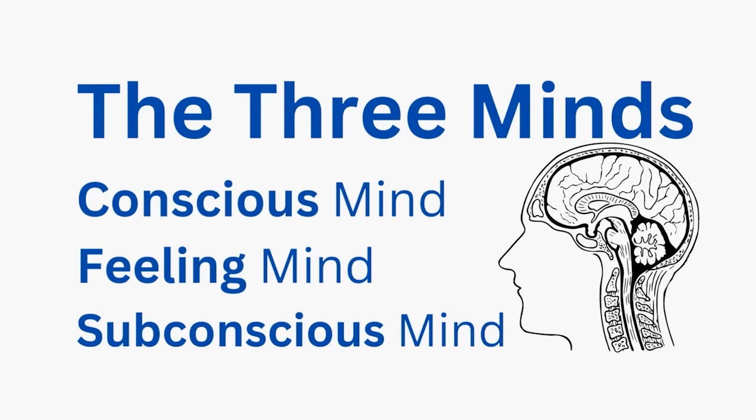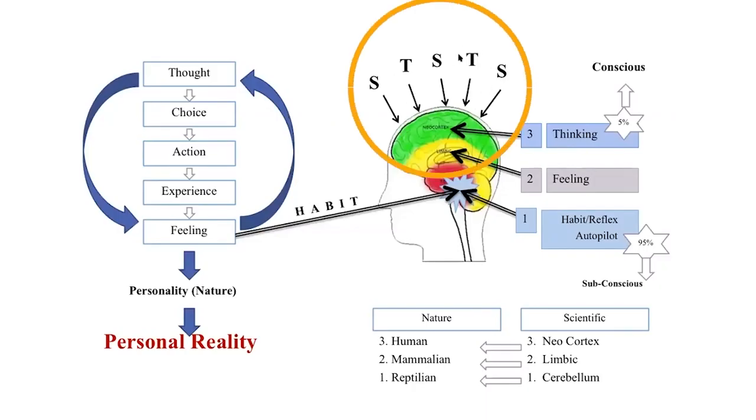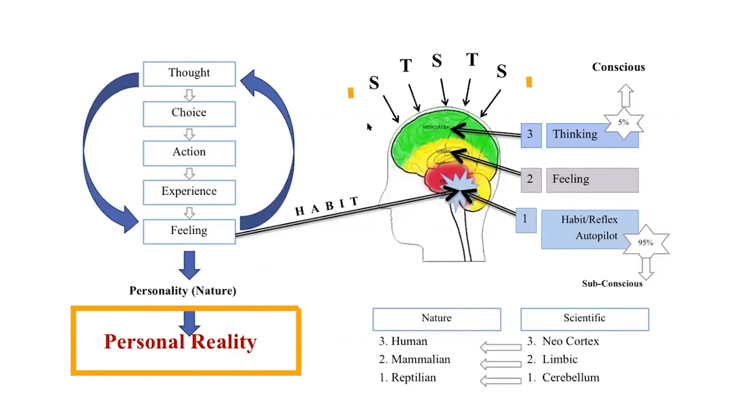What we are saying is the type of thoughts we are having is the type of nature we create. So what gets manifested in our life is this. For example, we get angry thoughts, we are upset on someone. We get angry thoughts, so our nature becomes angry.